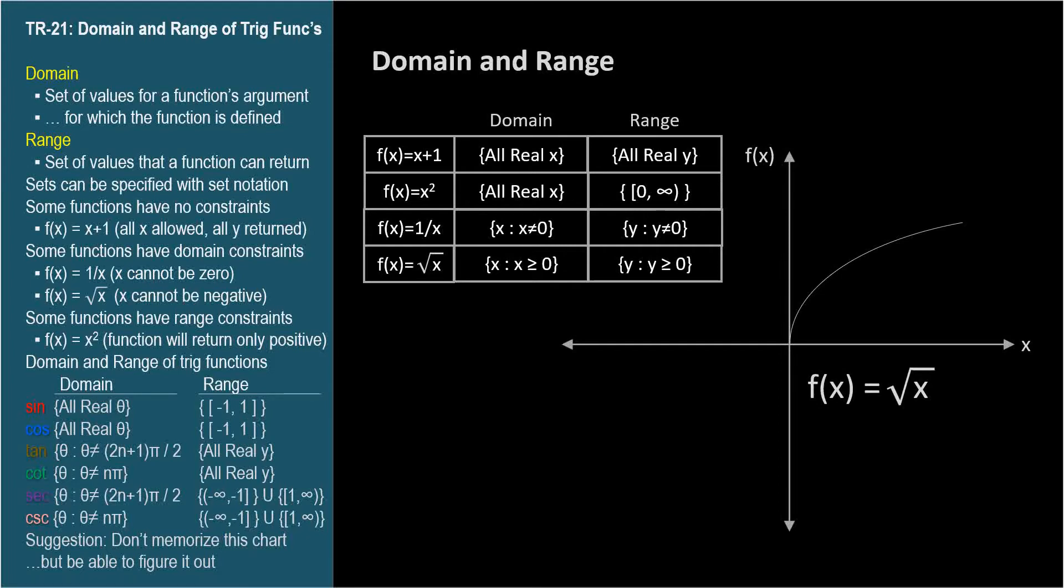In general, domains are only constrained when the function's variable is in the denominator of a fraction, or when it's within a square root. Constraints on the range depend on the nature of the function.